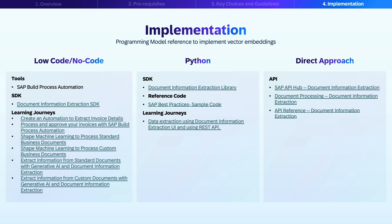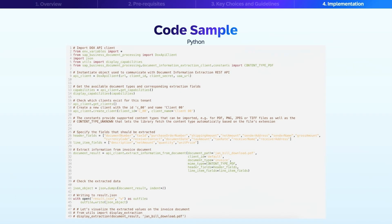SAP has published APIs for the Document AI service. You can consume these API endpoints to extract the desired information from your documents. Let's look at a code example of how to leverage the Document AI SDK in Python to extract data from a document.